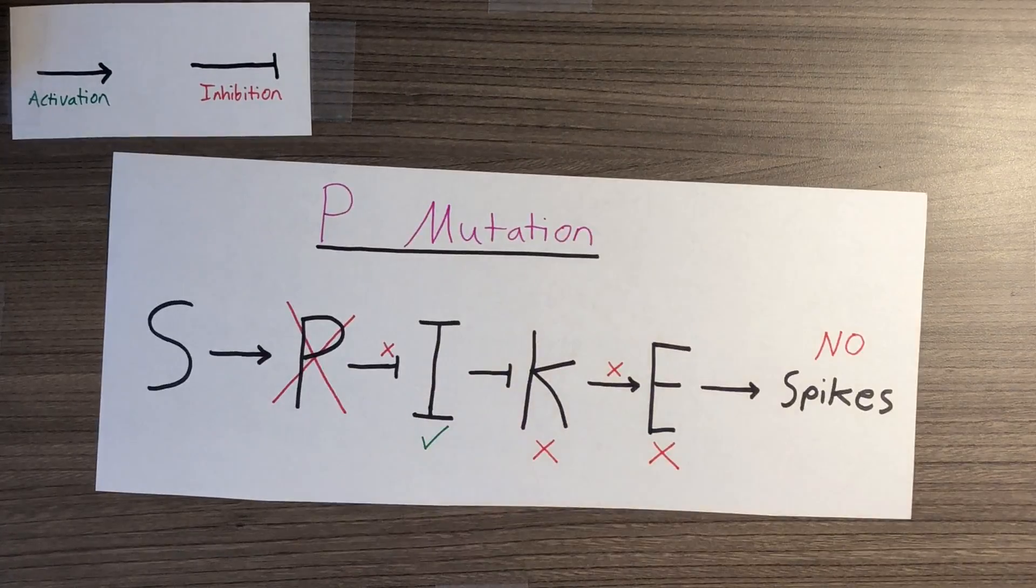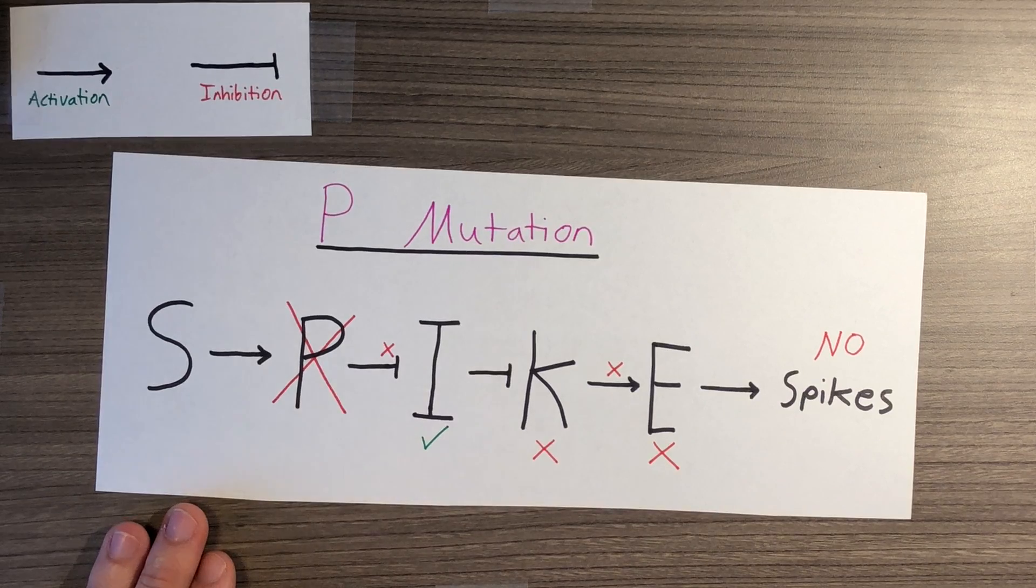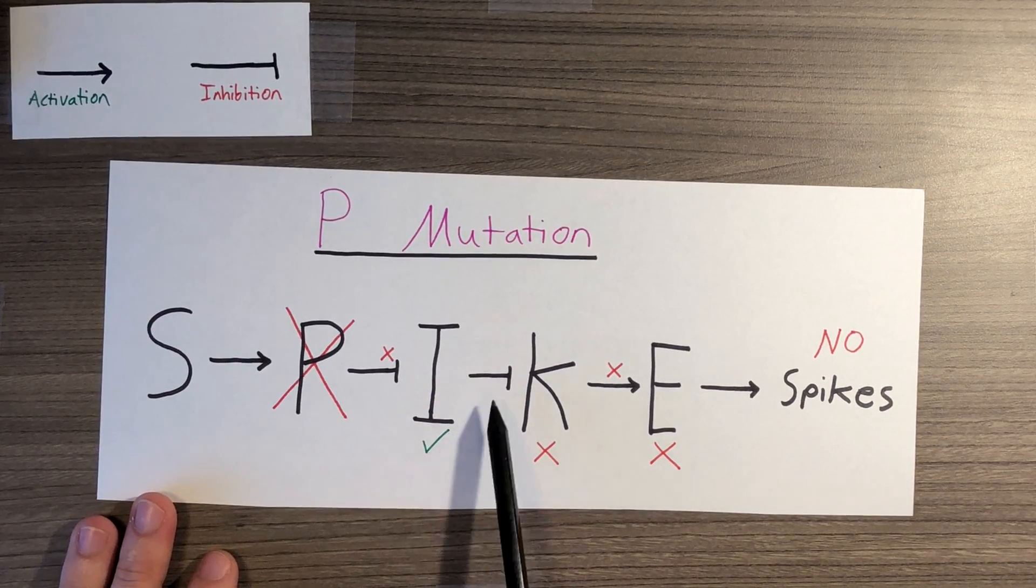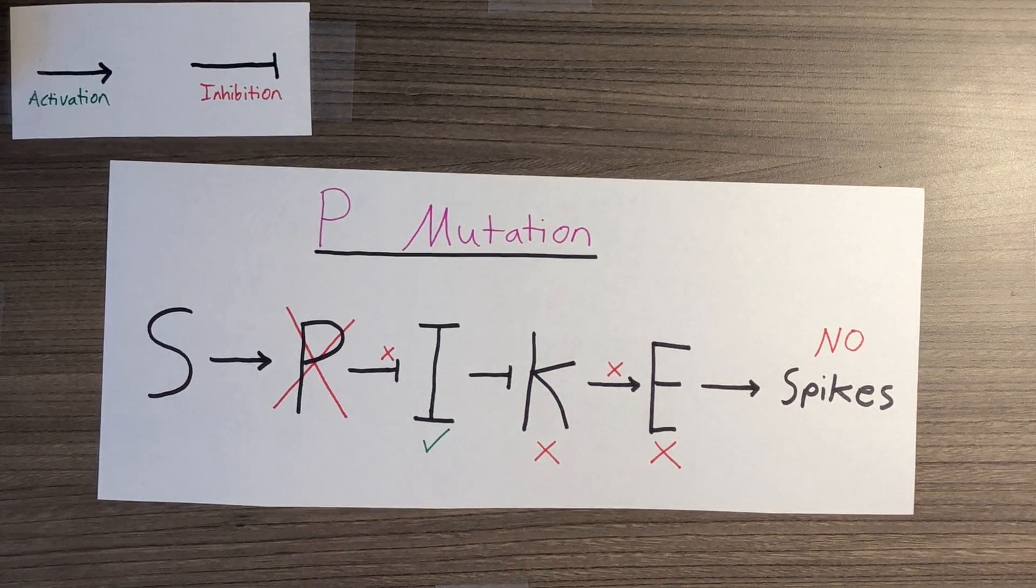The first mutant cell we will look at cannot produce the P gene, and anything before that we do not have to look at. A mutation in the P gene will not inhibit the I gene, which means the I gene is functional, so it will inhibit the K gene, therefore the E gene will not be stimulated. This results in skin cells with no spikes.